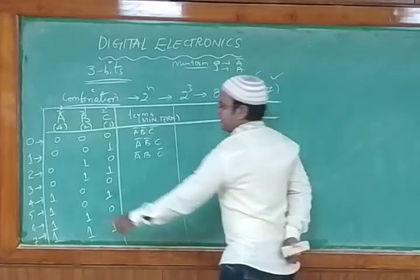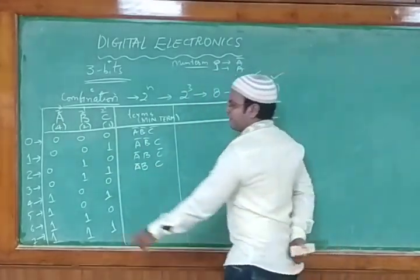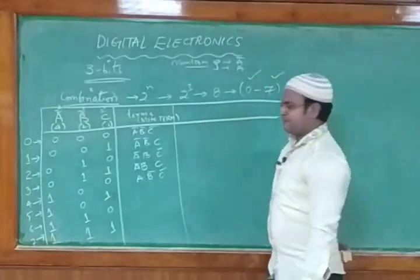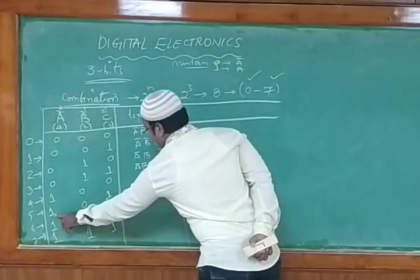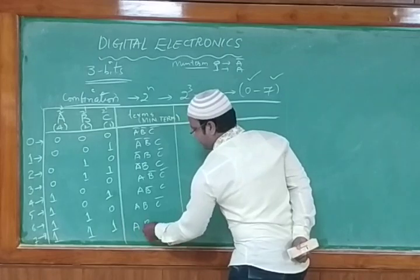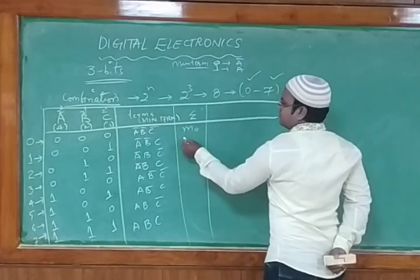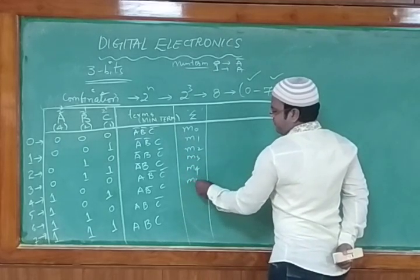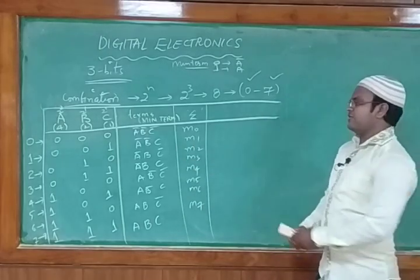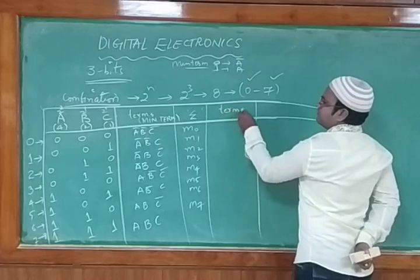For maxterm, the rule is reversed: 0 becomes the variable (no complement), and 1 becomes the complement. Terms are written with addition (OR). So M0: a+b+c, M1: a+b+c̄, M2: a+b̄+c, M3: a+b̄+c̄, M4: ā+b+c, M5: ā+b+c̄, M6: ā+b̄+c, M7: ā+b̄+c̄. This is written as pi(M0, M1, M2, M3, M4, M5, M6, M7).